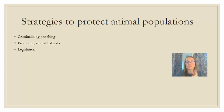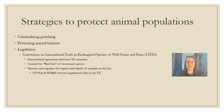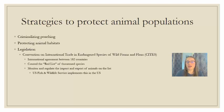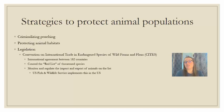Two pieces of legislation are important here. The first is CITES — the Convention on International Trade in Endangered Species of Wild Fauna and Flora — which appears on the AP exam every year. This international agreement created the Red List, a list of threatened and endangered species given international protection. Wherever you are in the world, possession of animal parts from listed species puts you in serious trouble, and it allows countries to work together to monitor the import and export of those animals.